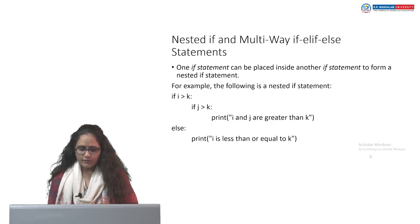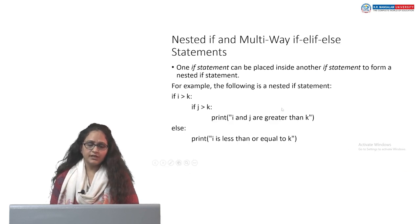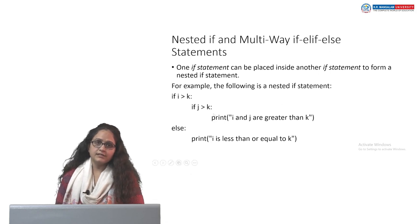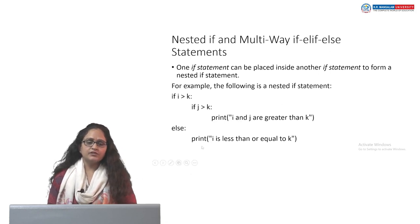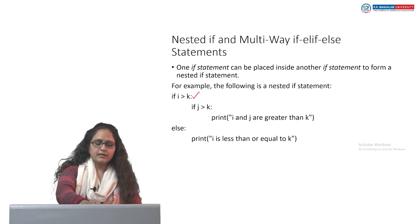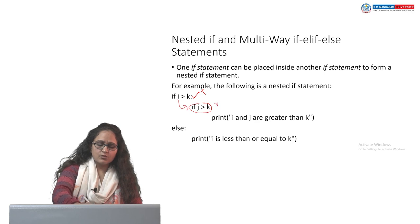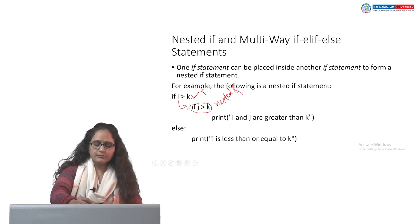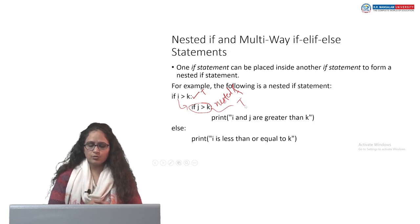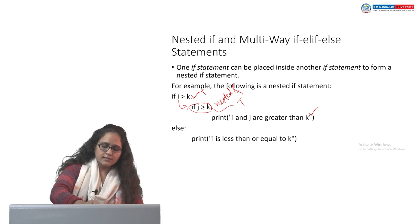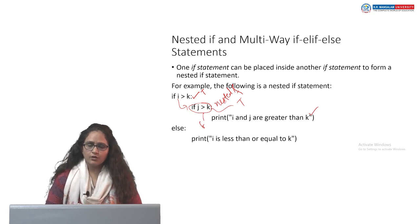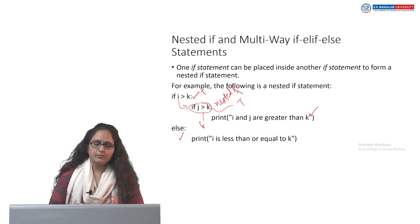Apart from one-way if and if-else, we have nested if and nested if with else. In this example, if i is greater than k and this condition is true, another if inside it is checked — this is called a nested if statement. If the inner condition is also true, the inner statement executes. If the outer condition is false, the nested if is skipped and the else part executes.